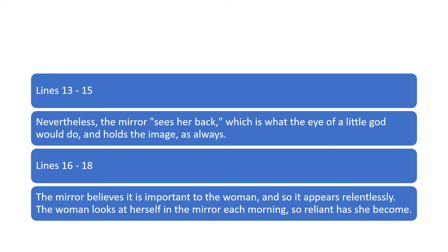In lines 16 to 18, the mirror believes that it is important to the woman, and so it appears relentless. It doesn't ease itself up. And it just shows the woman hard and fast what is there. The woman looks at herself in the mirror each morning, and she has become so dependent on this mirror. So the revelation, which is hardly a shock to us as the readers, is that the woman's younger self is dead. And that woman's younger self has drowned by its own hands. And replacing the girl on a daily basis, we find an older woman surfacing like a terrible fish.